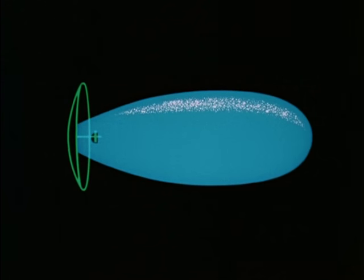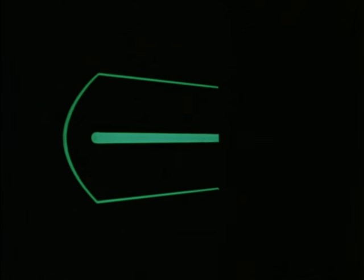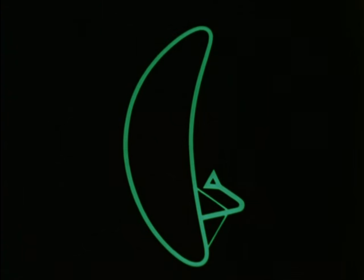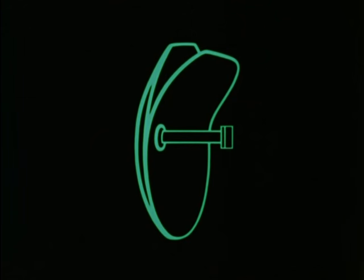Other antennas can be derived from the basic parabola, such as the parabolic cylinder, the orange peel paraboloid, and the cosecant squared antenna. All these antennas are made directive by the application of simple principles.